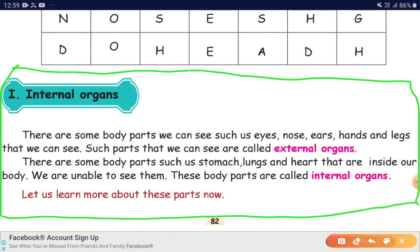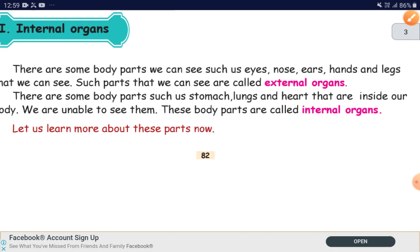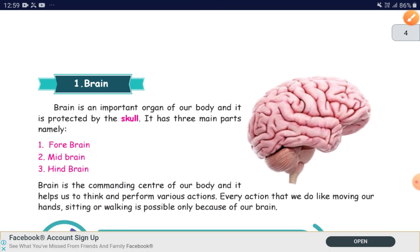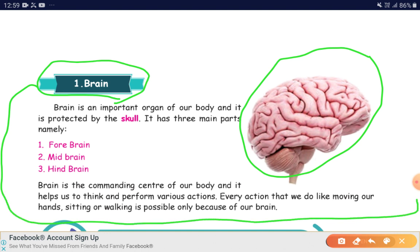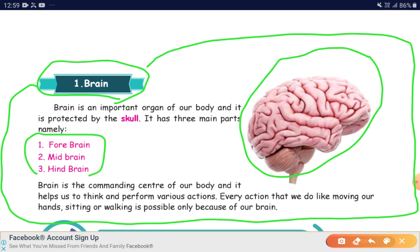What are all the internal organs? Stomach, lungs, intestine, heart. These parts we are not able to see through our eyes. The first one we are going to study about is brain. Brain is an important organ of our body. It is protected by the skull. It has three main parts: forebrain, midbrain, and hindbrain.